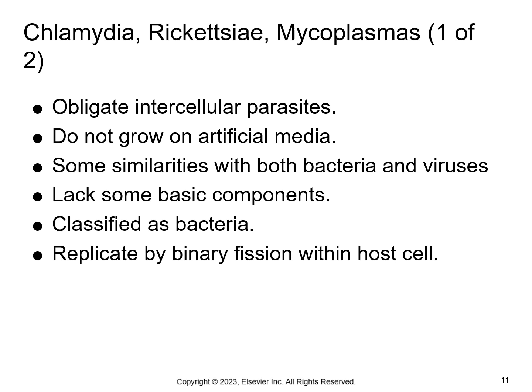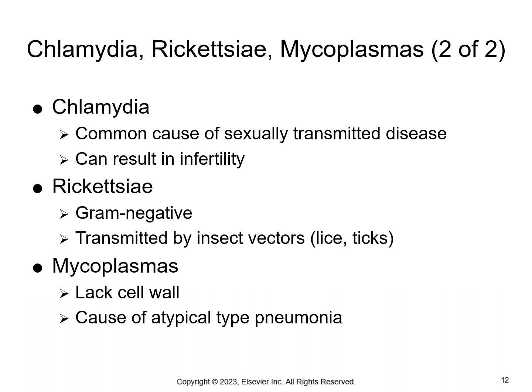These three groups of microorganisms are similar to both bacteria and viruses. They're classified as bacteria but require a living host for reproduction. Chlamydia is a common STD that causes PID or pelvic inflammatory disease; it can result in sterility or infertility in women, and if mom has chlamydia, her infant can develop eye infections or pneumonia. Rickettsia are gram-negative bacteria that live in a host cell, transmitted by insects like lice and ticks, and cause diseases like typhus fever and Rocky Mountain spotted fever. Mycoplasmas are a common cause of pneumonia; they don't have a cell wall, so they aren't affected by many antimicrobial drugs.